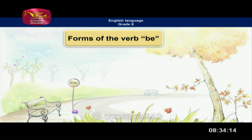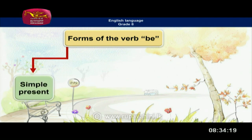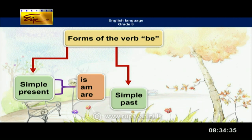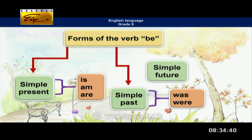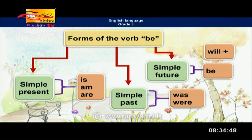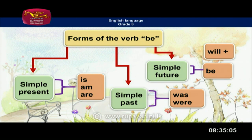We will move on to forms of the verb 'be'. In the simple present tense, the forms of verb 'be' are is, am, and are. In the simple past tense, we have was and were. In simple future tense, we use 'be' with 'will'. In simple present tense: is with singular, are with plural. In simple past: was with singular, were with plural. In simple future tense, with both singular and plural, we use 'be' with 'will' — will and be go together.